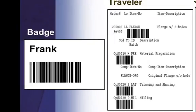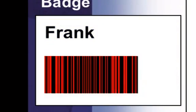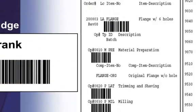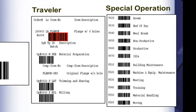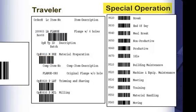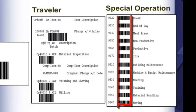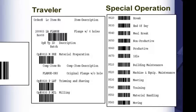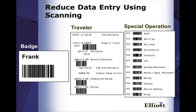Here's an example. Frank can start a production by scanning his ID badge. He can then scan the barcoded work order and operations number on the traveler ticket. He can also scan any special operations, which represents any activities that are production or non-production related. This allows the system to collect labor and machine hours without the user having to manually enter and calculate it.